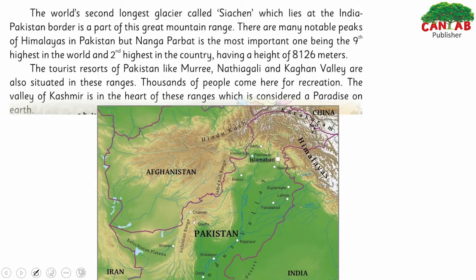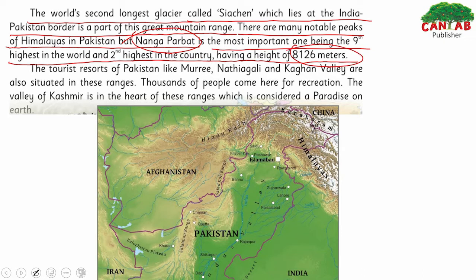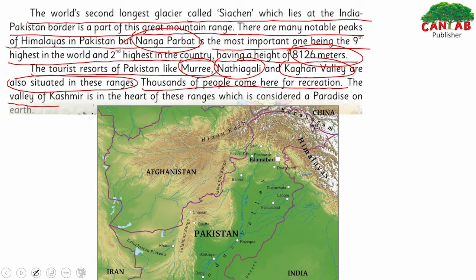The world's second longest glacier, Siachen, which lies at the India-Pakistan border, is part of this great mountain range. There are many notable peaks of the Himalayas in Pakistan, but Nanga Parbat is the most important — ninth highest in the world and second highest in Pakistan, with a height of 8,126 meters. Tourist resorts like Murree, Nathiagali, Kaghan, and Swat Valley are situated in these ranges. The valley of Kashmir, considered a paradise on earth, is also in the heart of these ranges.